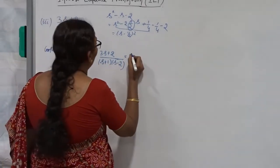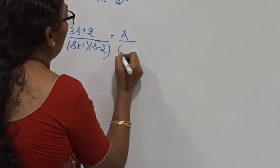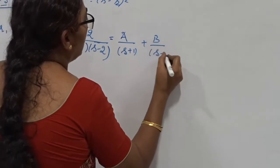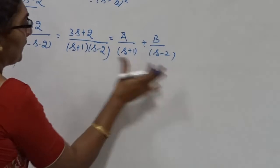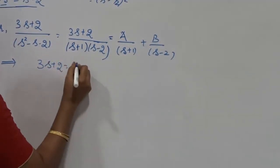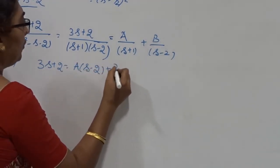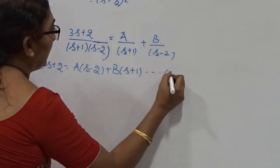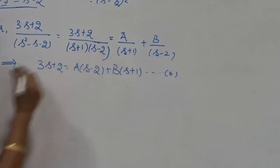Now, what we get is: (3s + 2) / [(s + 1)(s − 2)] equals A/(s + 1) plus B/(s − 2). Take LCM. Once you take LCM both sides, the denominator cancels. What remains is: 3s + 2 must equal A(s − 2) + B(s + 1). Now I have to give different values of s to find A and B.